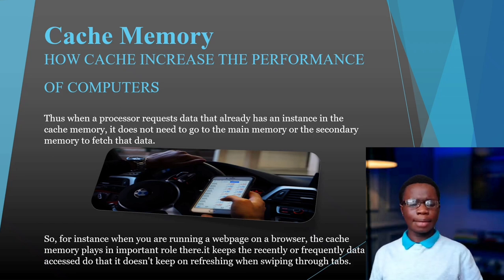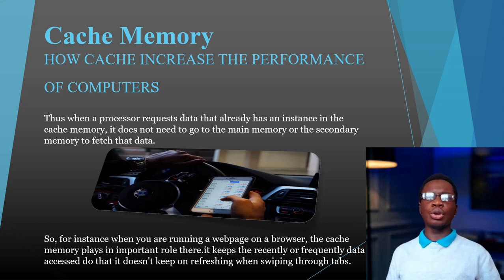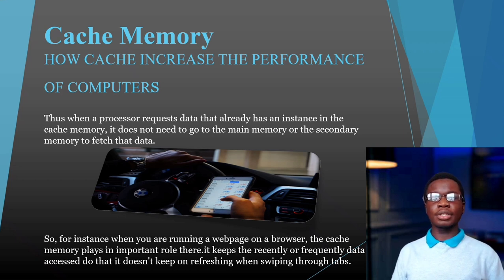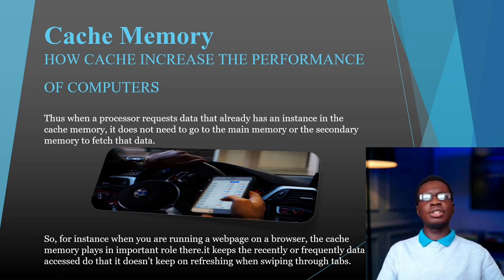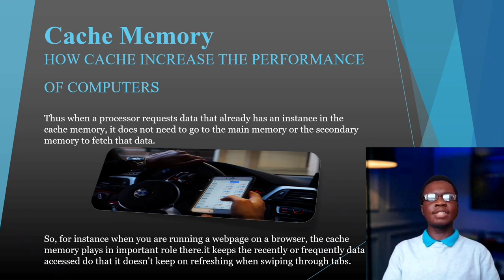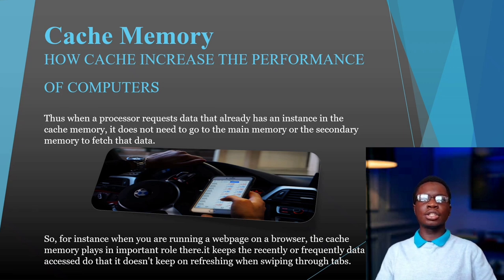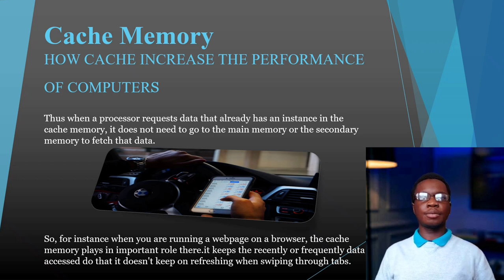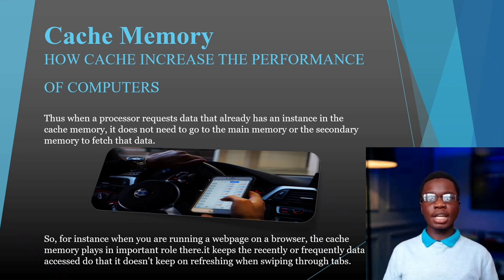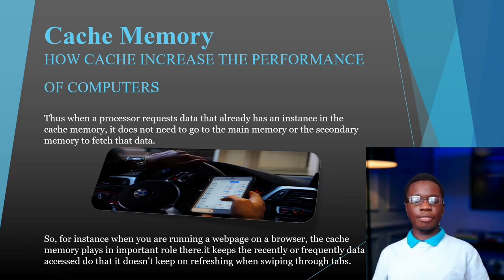Cache memory really comes in handy when you are using a web browser — for instance, going through web pages, changing tabs, browsing through different websites. The cache keeps some of these commands so the CPU won't need to go back to main memory, allowing it to run faster and increasing its performance.